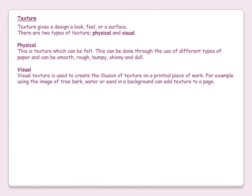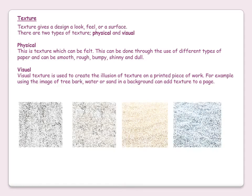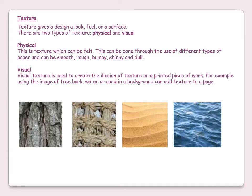Texture gives a design a look, feel or a surface. There are two types of texture: physical texture and visual texture. Physical texture is a texture which can be felt, done through the use of different types of paper — it can be smooth, rough, bumpy, shiny or dull. Visual texture is used to create the illusion of texture on a printed piece of work — for example, using the image of tree bark, water or sand in a background can add texture to a page. It is probably unusual that you will use physical texture in Higher Graphic Communication, but visual texture is one you could easily use.